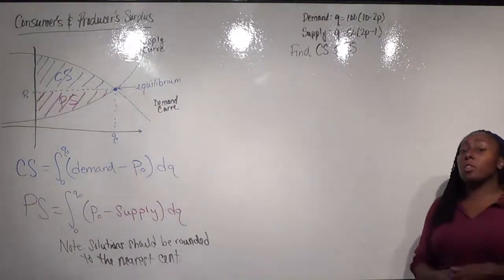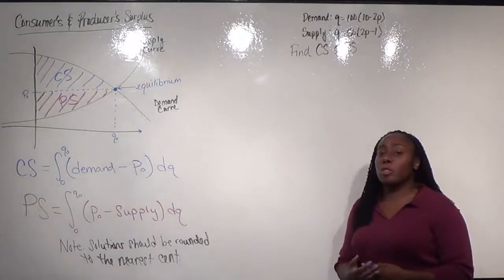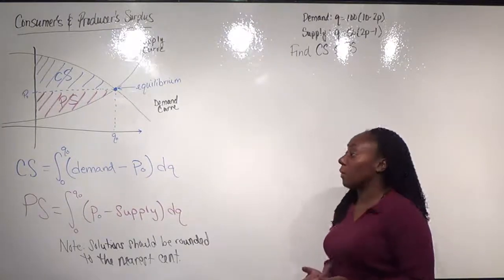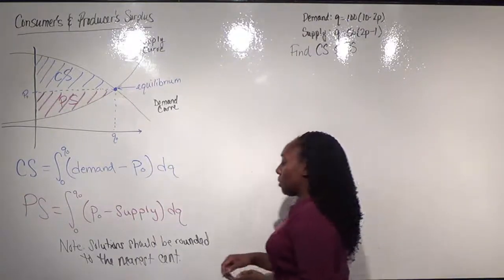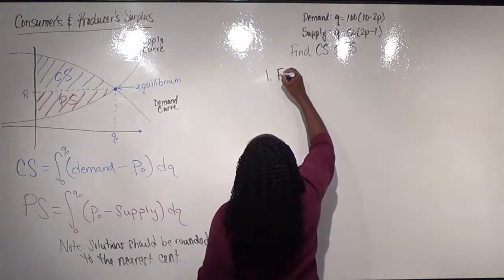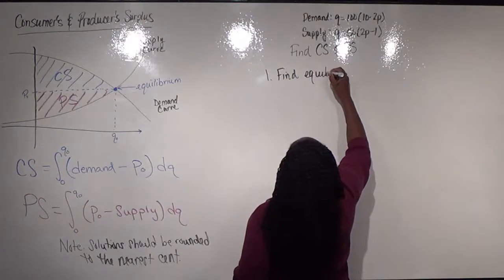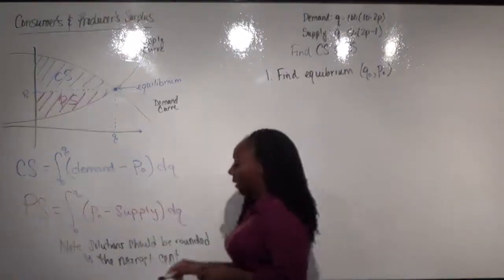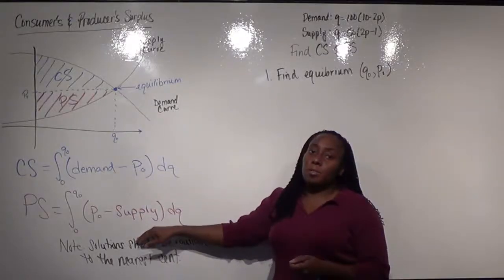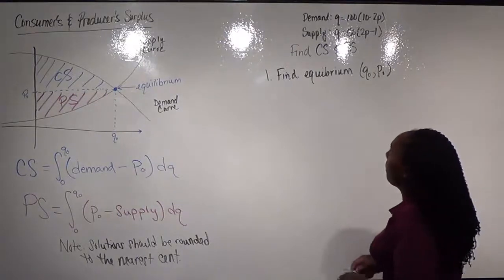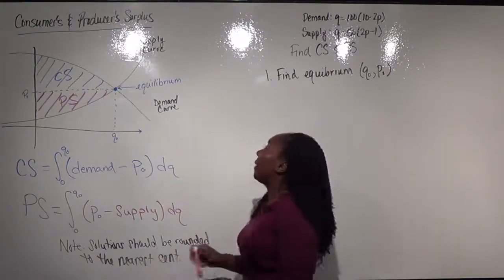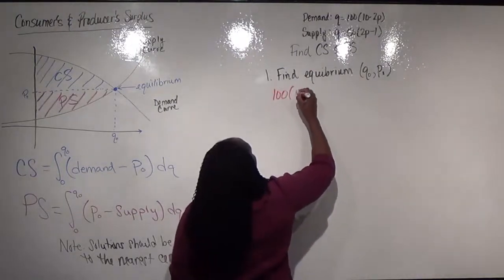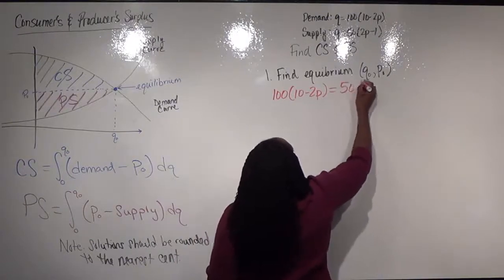Like most of our problems, it doesn't hurt to graph the equations, but you can make the assumptions we've already stated, so you don't have to graph them unless you want to see what they look like. The first step in any of these problems is we need to find the equilibrium — we need to know what q-naught and p-naught are, because without the equilibrium I can't set up either of my equations. To find the equilibrium, we're going to set the equations equal to each other and find the value that makes those true. So here I'm going to look at 100(10 − 2p) and set that equal to 50(2p − 1).